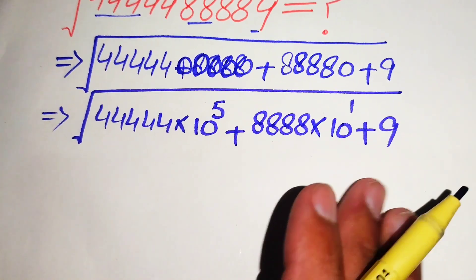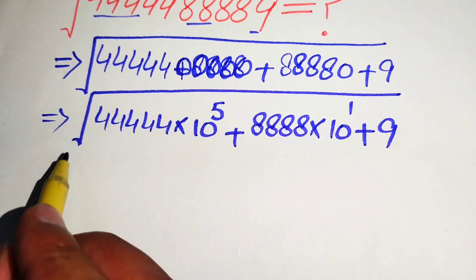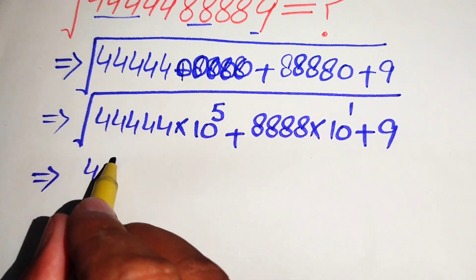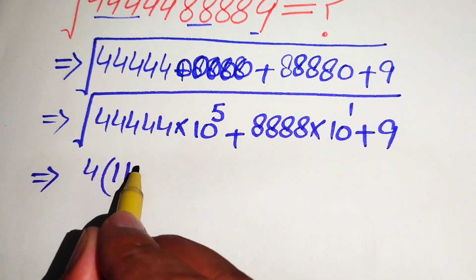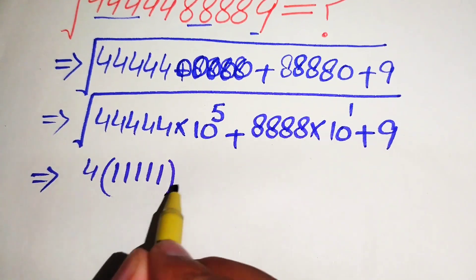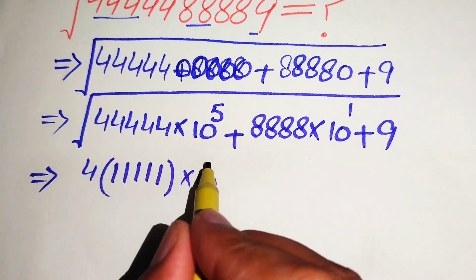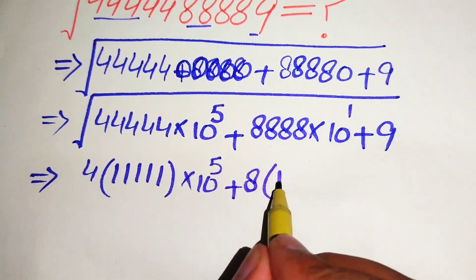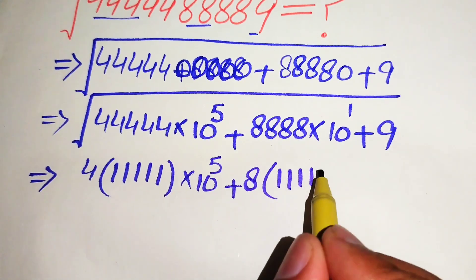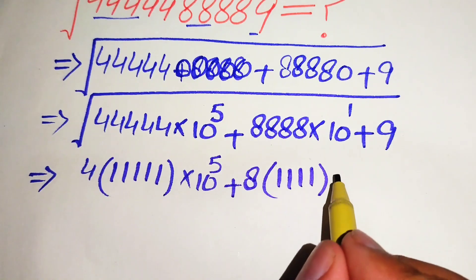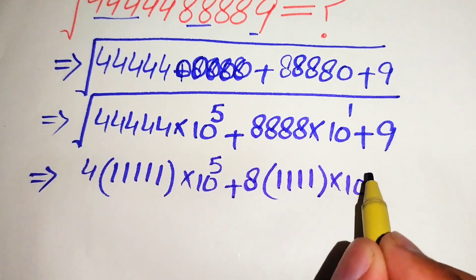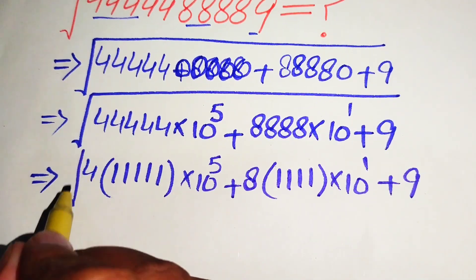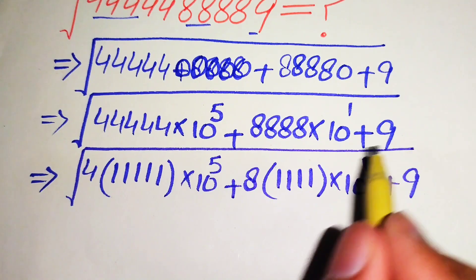After that, we take 4 as a common factor from these terms and write it as 4 times of 1, 1, 1, 1, 1, and 1, multiplied by 10 raised to power 5. Then we take 8 as common and get 1, 1, 1, 1 — 4 times of 1 — multiplied by 10 raised to power 1, plus 9, and its whole square root.